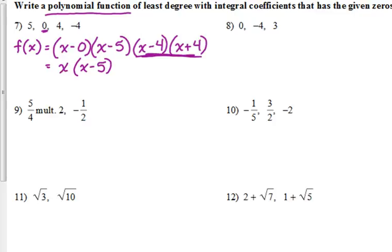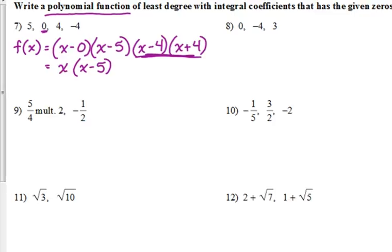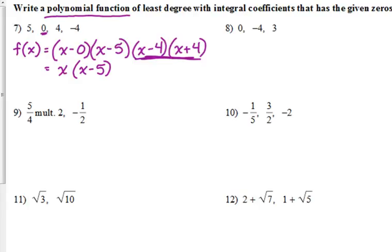Now the nice thing about pairing these together is that x minus four times x plus four is the factoring of the difference of perfect squares. When we multiply x minus four times x plus four, x times x is x squared. x times positive four is positive four x. Negative four times x is negative four x. Those cancel. Plus four x minus four x, they cancel. Negative four times positive four is negative 16.